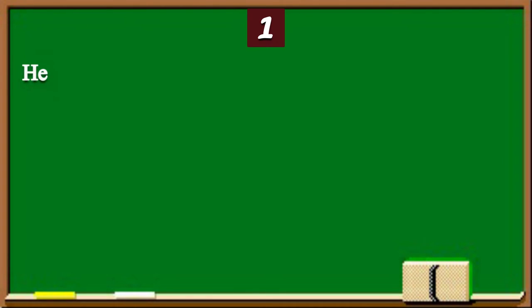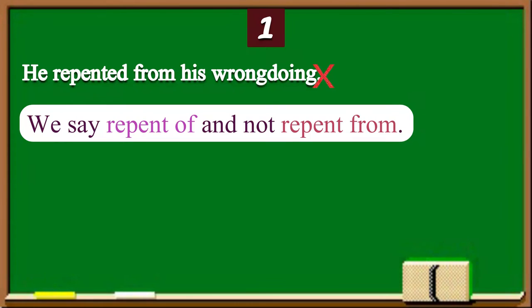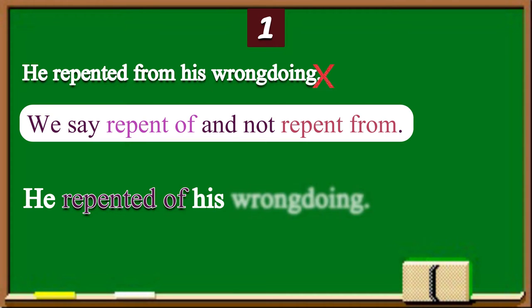Number one: 'He repented from his wrongdoing.' This is incorrect. We say 'repent of' and not 'repent from.' Please repeat the correct sentence after me: He repented of his wrongdoing.